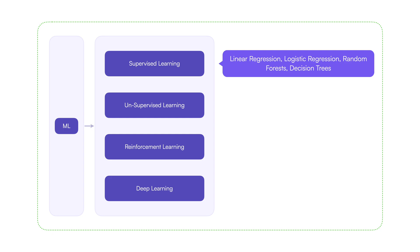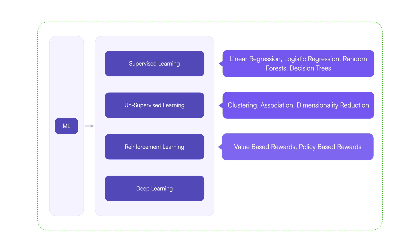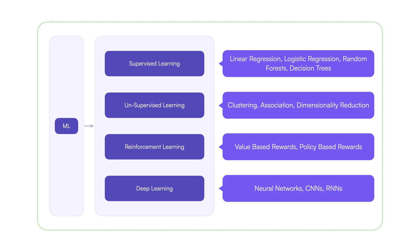In unsupervised learning, the commonly used algorithms and techniques are clustering, association, and dimensionality reduction. In reinforcement learning, we have value-based and policy-based reward systems. Finally, neural networks, convolutional neural networks, and recurrent neural networks are part of deep learning.